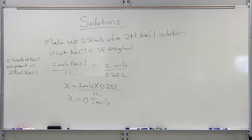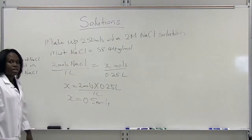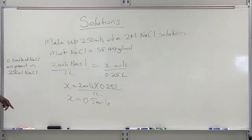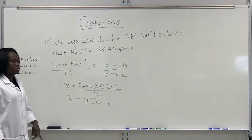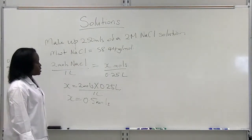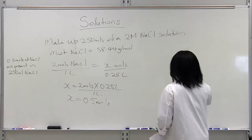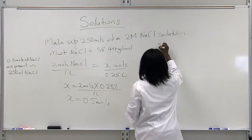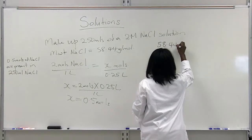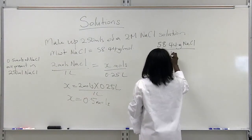Now, physically, in order to make up the solution, we need to determine how many grams of sodium chloride we need. We know how many moles will be present in the solution, so what we need to do now is convert the moles to grams to determine how much we are going to add to our 250 mL. We are going to set up a ratio and proportion equation. Our molecular weight tells us that 58.44 grams of sodium chloride make up 1 mole of sodium chloride.